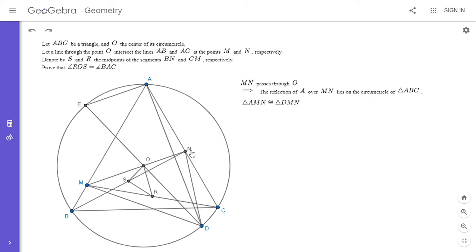MN has to be perpendicular to AD. That's true because D is the reflection of A over MN. And also EA is perpendicular to AD because ED is a diameter of the circle.